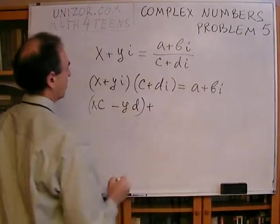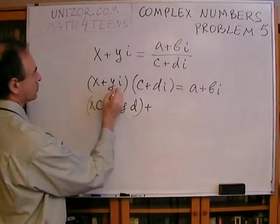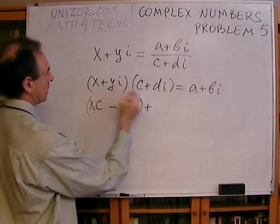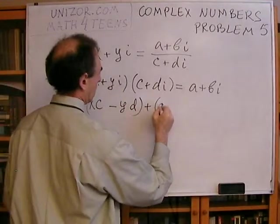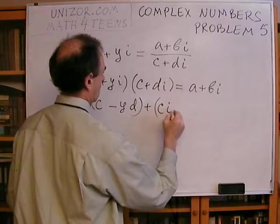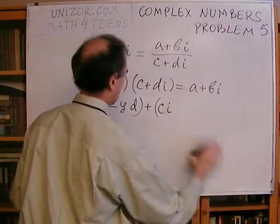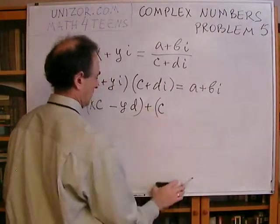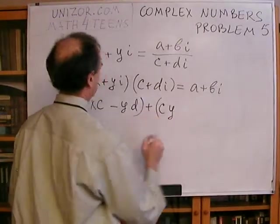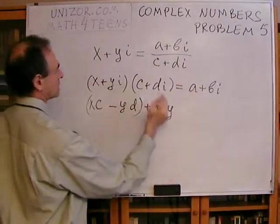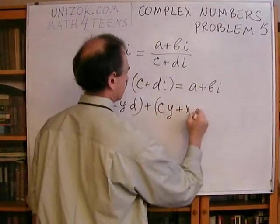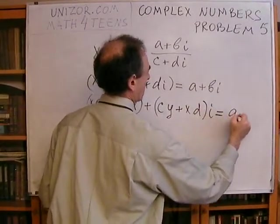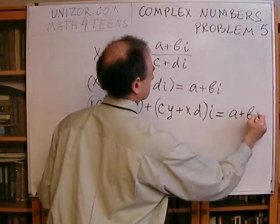Now, the imaginary part would be, coefficient with I will be C times Y and X times D. And that would be equal to A plus B I.